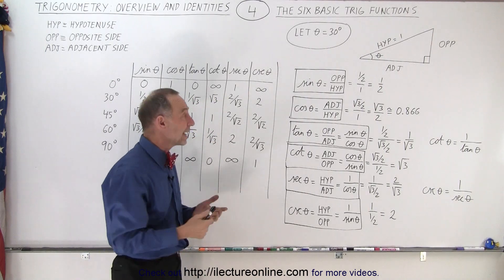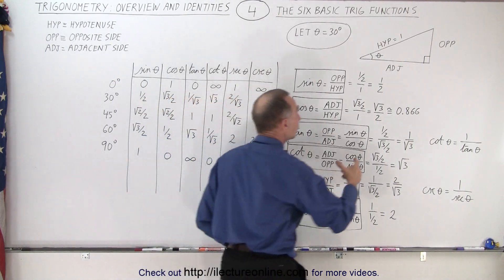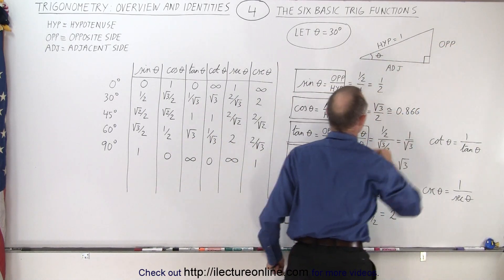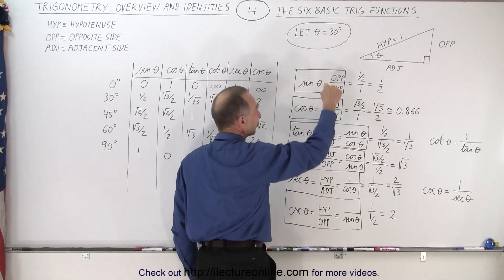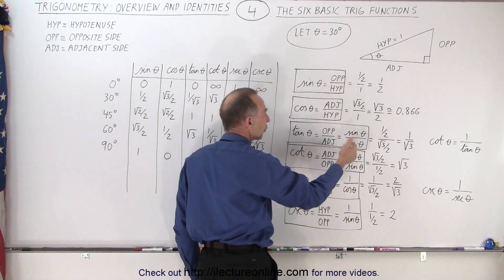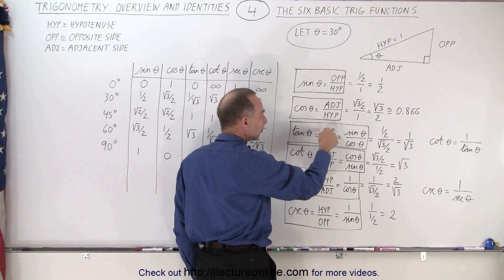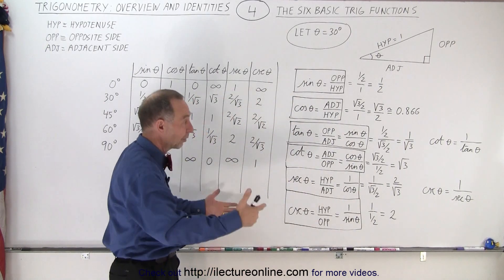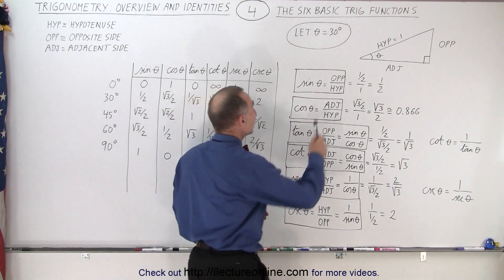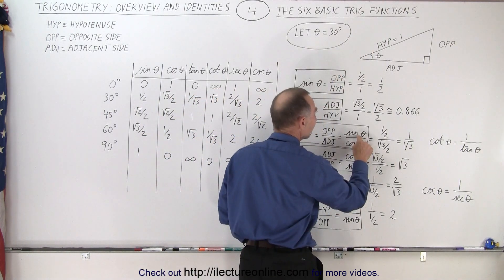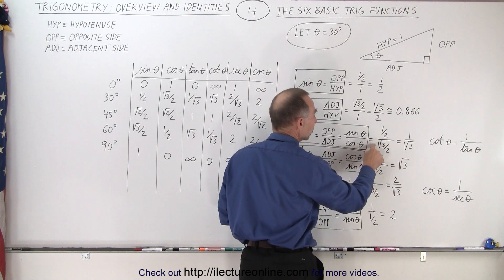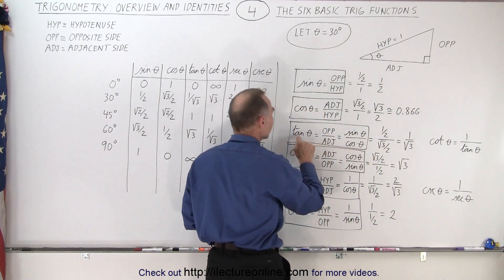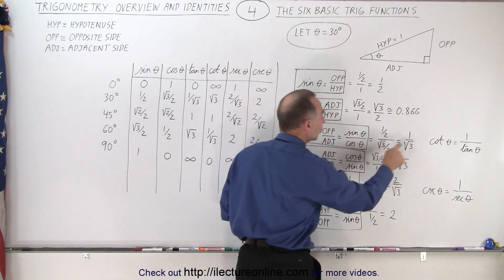What about the tangent of angle theta? The tangent by definition is the ratio of the opposite side to the adjacent side. By definition, if you take the opposite side over the adjacent side, that's the same as saying the sine over the cosine. So the tangent can be defined either way, and the result is exactly the same regardless of the value of the angle. When the angle is 30 degrees, the sine of theta is one-half and the cosine of theta is the square root of three over two. Simplifying that, we get one divided by the square root of three, so the tangent of 30 degrees equals one over the square root of three.